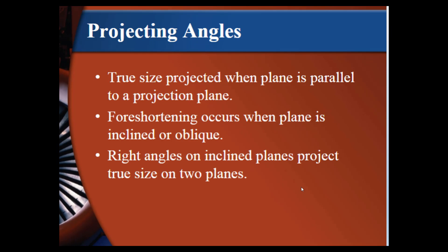Projecting angles. True size projected when plane is parallel to a projection plane. Foreshortening occurs when the plane is inclined or oblique. Right angles on inclined planes project true size on two planes.